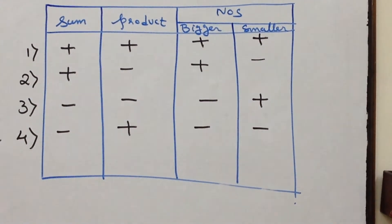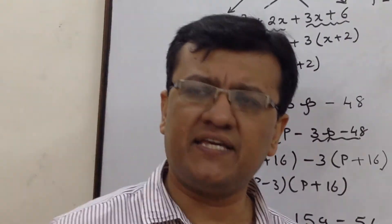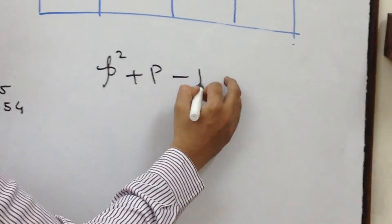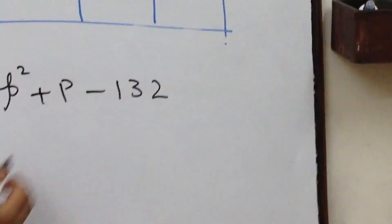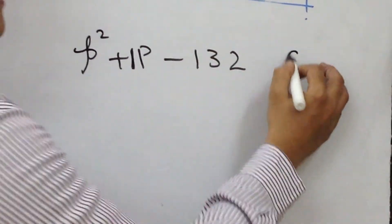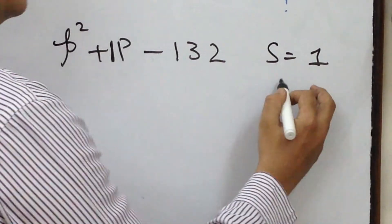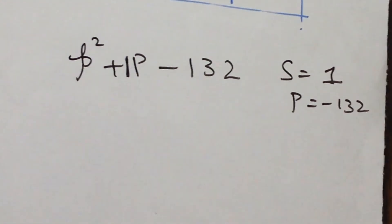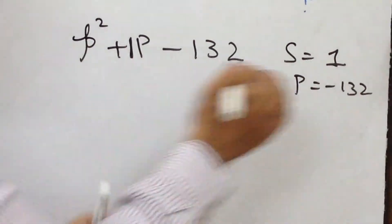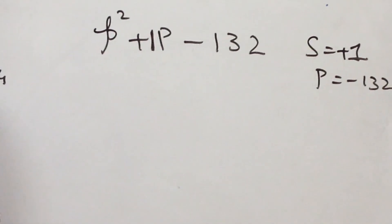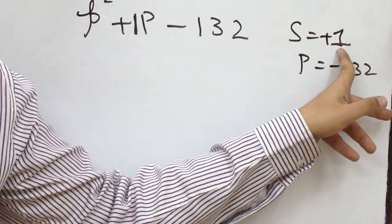I shall give you one more sum and a hint on this particular one. Say the sum is p squared plus p minus 132. Students, there is no coefficient in the middle term, so the coefficient is 1. Sum is 1 and the product is minus 132. The concept I wanted to tell you here is: irrespective of the sign, though over here the sum is plus 1,